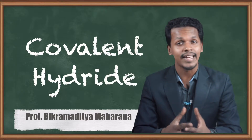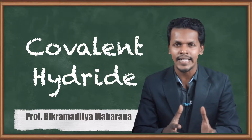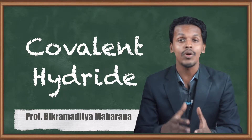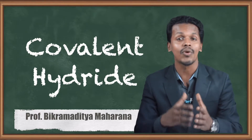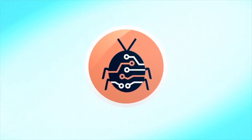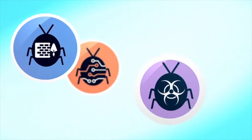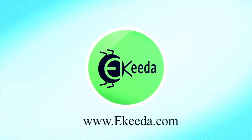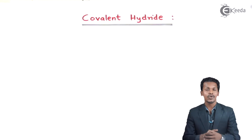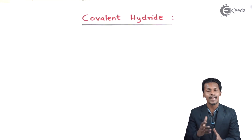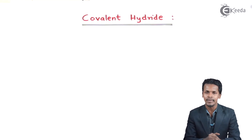As we have discussed earlier, there are different types of hydrates. We have recently discussed ionic hydrides, and now we are going to discuss covalent hydrates — what they are and what are the properties of those hydrates. Covalent hydrates are formed whenever hydrogen is combined with P block elements especially.